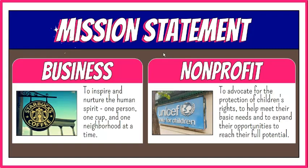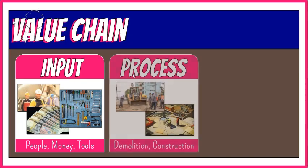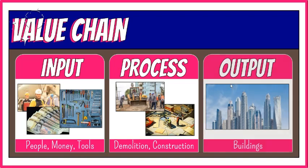An organization uses money, people, materials, machines and other equipment, data, information, and decisions. They serve as inputs to the organizational system. Then they go through a transformation mechanism. Finally, outputs are produced. The outputs from the transformation mechanism are usually goods or services, which are of higher relative value than the inputs alone.